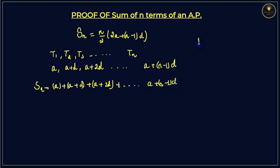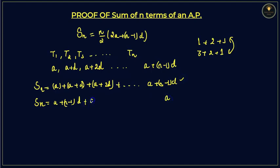Now, just as 1 plus 2 plus 3 and 3 plus 2 plus 1 are the same thing, we write the same series in reverse: Sn is equal to a plus n minus 1 times d, starting from the last term and going till a, with the next term being a plus n minus 2 times d, and continuing on till a.